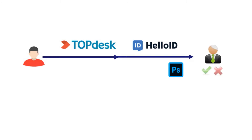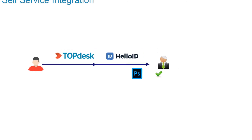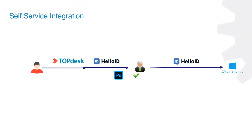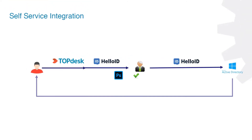If the approver says yes to the request, then HelloID will immediately grant access to the end user by placing them in the correct group that has access to Adobe Photoshop.